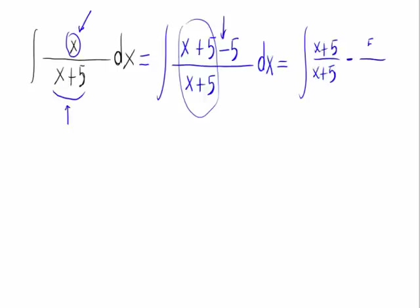And now we separate it in two different integrals, because the integral properties state you can do it. This would be the integral of the first take away the integral of the second. This would be the integral of (x plus 5) over (x plus 5), and something divided by itself is 1.